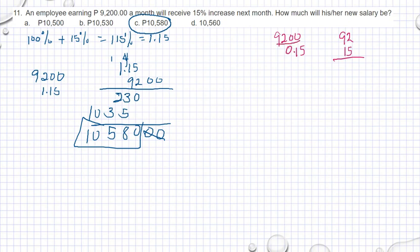If I'm going to divide this by 10 and I'm going to multiply this by 10, then it will be 92 times 15, and we have 10. And 45, 46, and then 12, 9, and 0, 8. What will be 13, 13, 1,380.